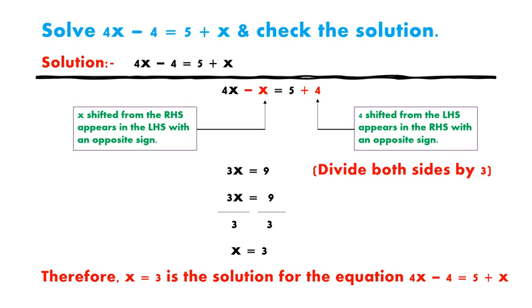Now we have to remove or eliminate 3, so we have to divide both sides by 3. So 3x by 3 is equal to 9 by 3. We get x is equal to 3. Therefore, x is equal to 3 is the solution for the equation 4x minus 4 is equal to 5 plus x.